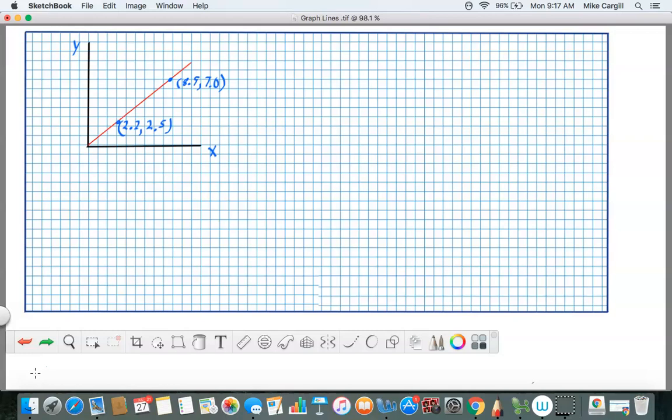Today I've taken the liberty to go ahead and draw a graph with x and y coordinates and I've established two points along that line. The first one is at 2.2 and 2.5, and the second one is 8.9 and 7.0. So this is the graph that we're going to be using.